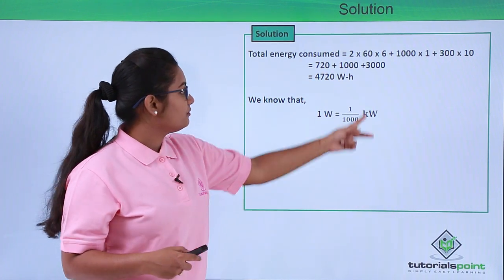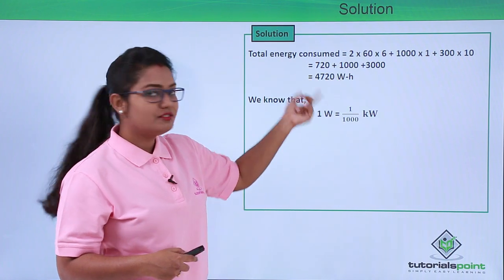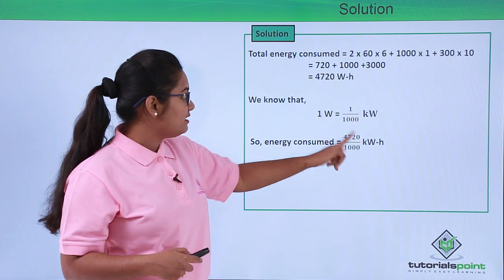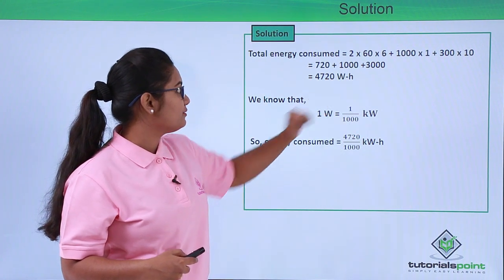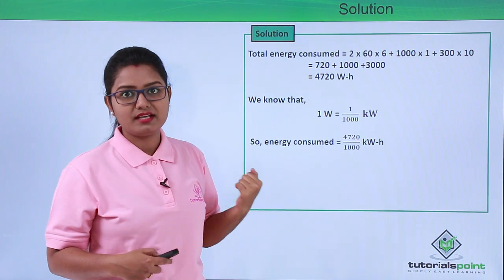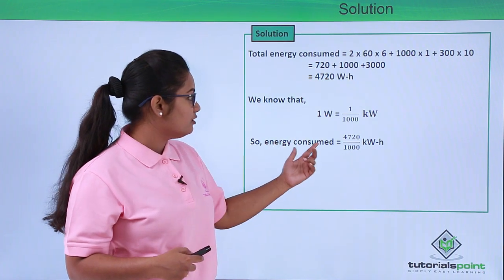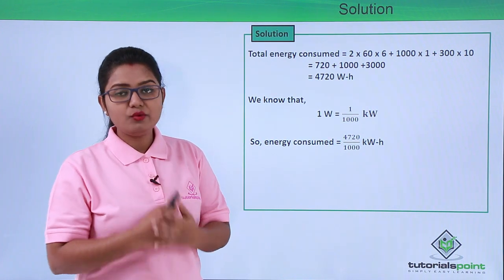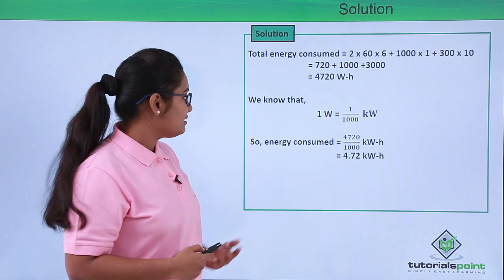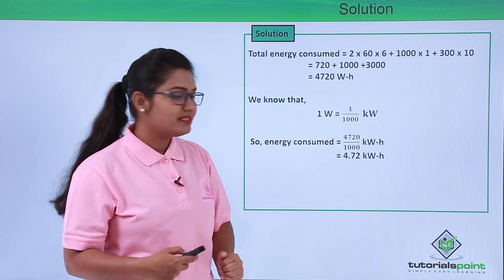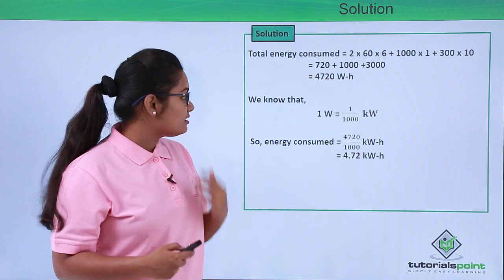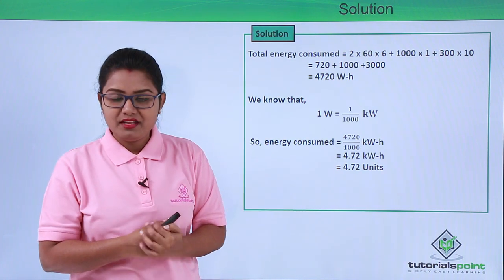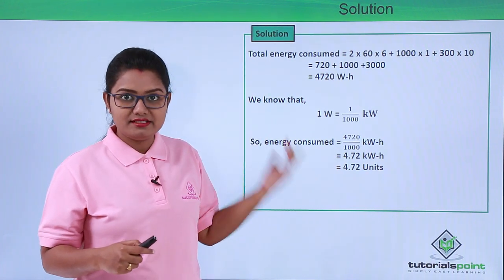Using this relation to convert watts to kilowatts, we divide 4720 by 1000. So the energy consumed equals 4720 ÷ 1000 kilowatt-hours, which turns out to be 4.72 kilowatt-hours, giving us 4.72 units of energy.